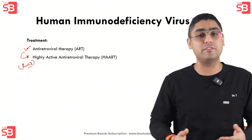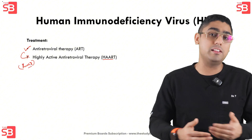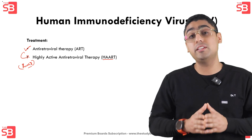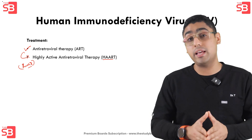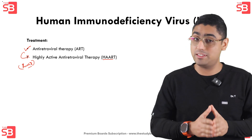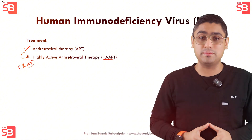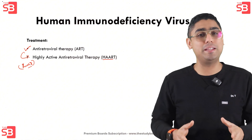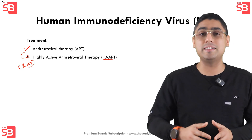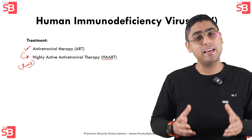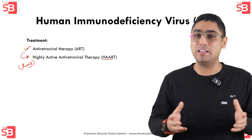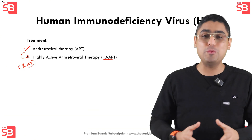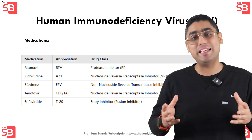A more intensive form of ART is HAART — highly active anti-retroviral therapy. This involves a three-drug regimen that should be started as soon as HIV is diagnosed — this is an exam question. HAART targets HIV replication at multiple points in its life cycle, helping to prevent the virus from developing resistance to treatment.